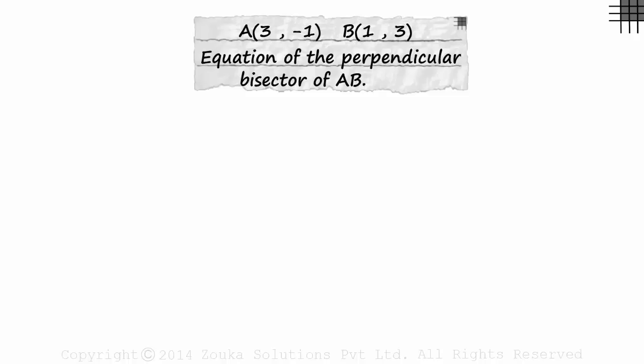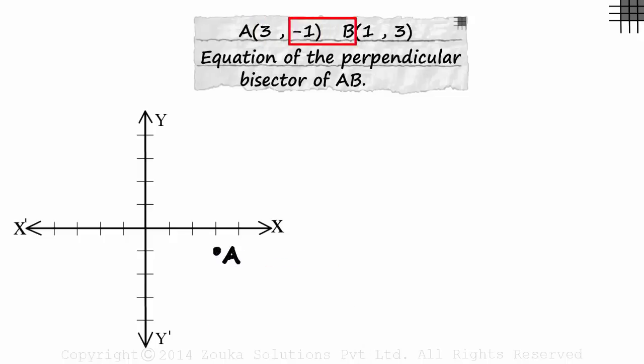First, let's plot the two points on the coordinate plane. 3 comma minus 1 will be here and 1 comma 3 will be this point. Let's join points A and B. Its perpendicular bisector will look a bit like this. Let's call it CD. CD is perpendicular to AB and it will also bisect AB.